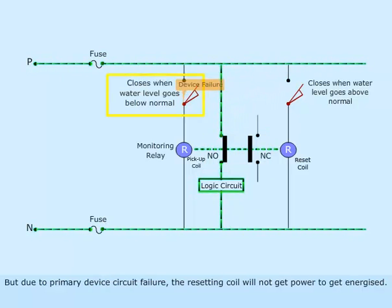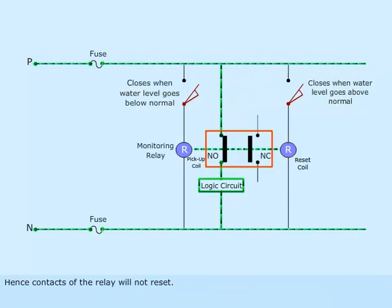But due to primary device circuit failure, the resetting coil will not get power to get energized. Hence, contacts of the relay will not reset.